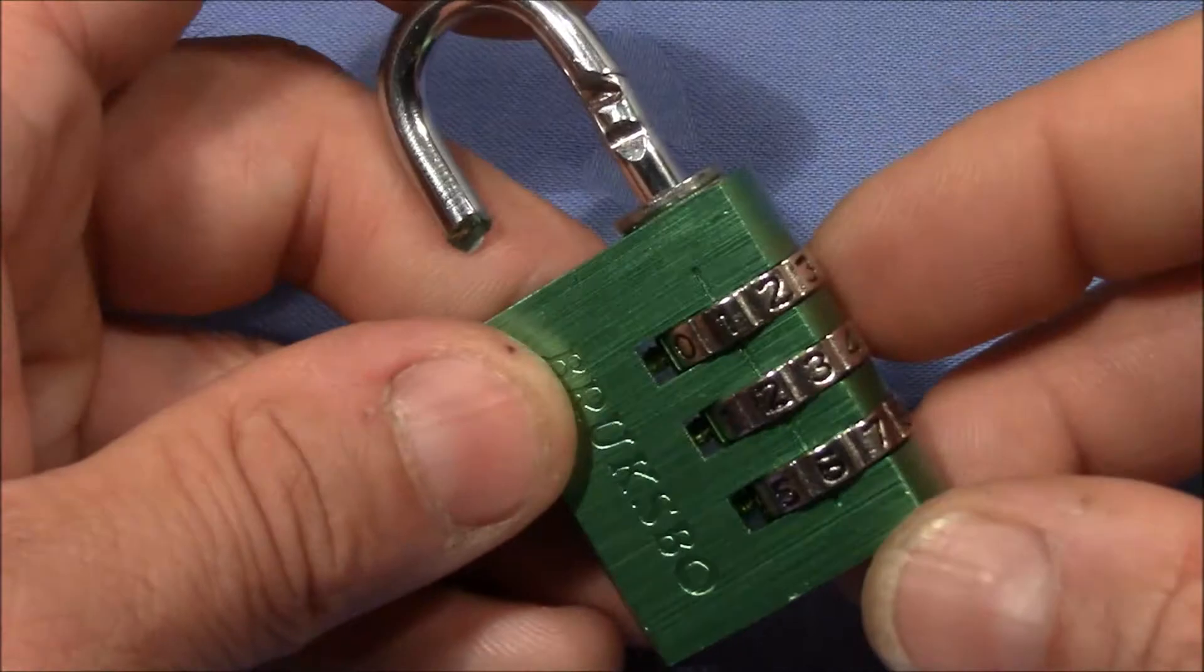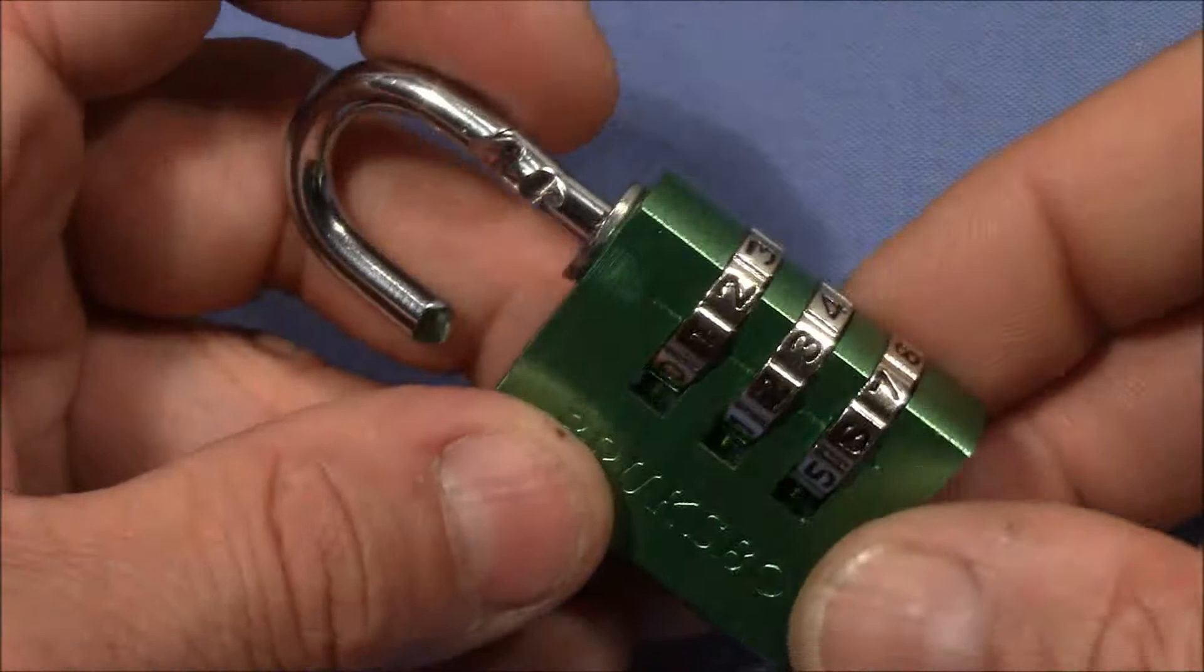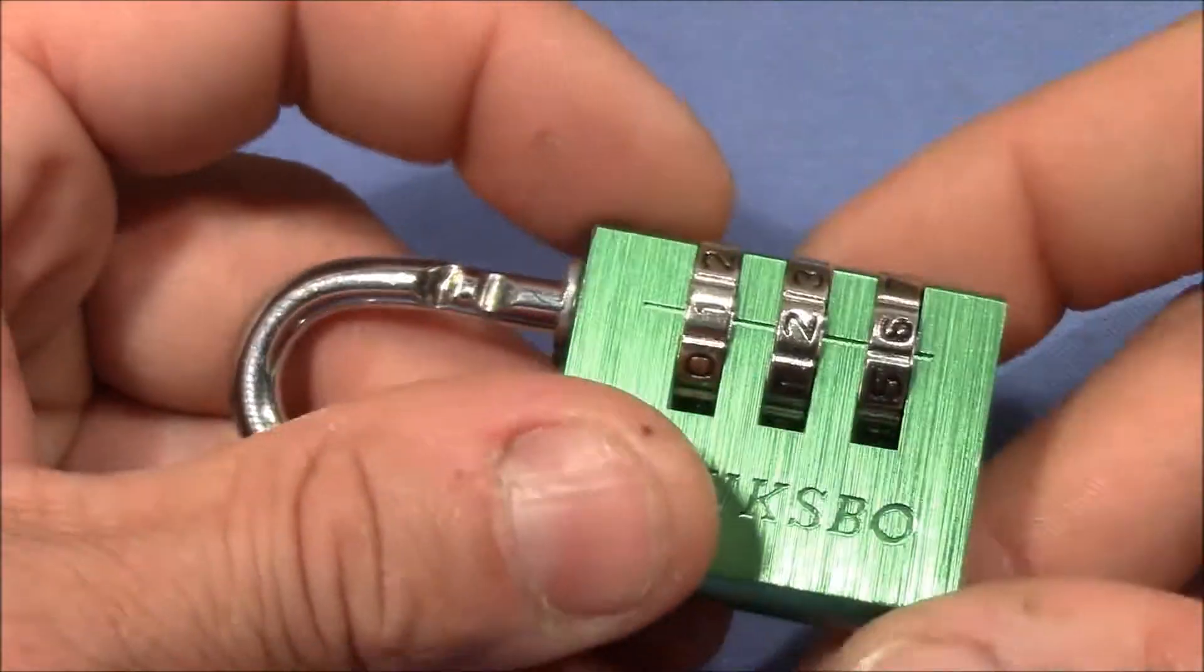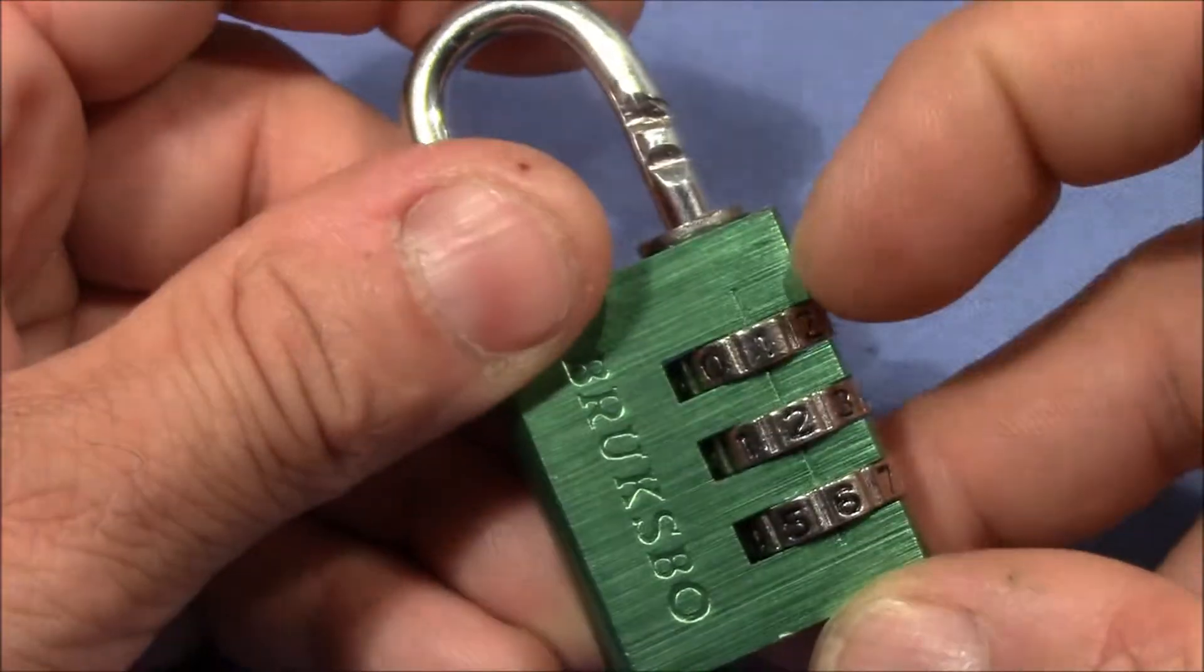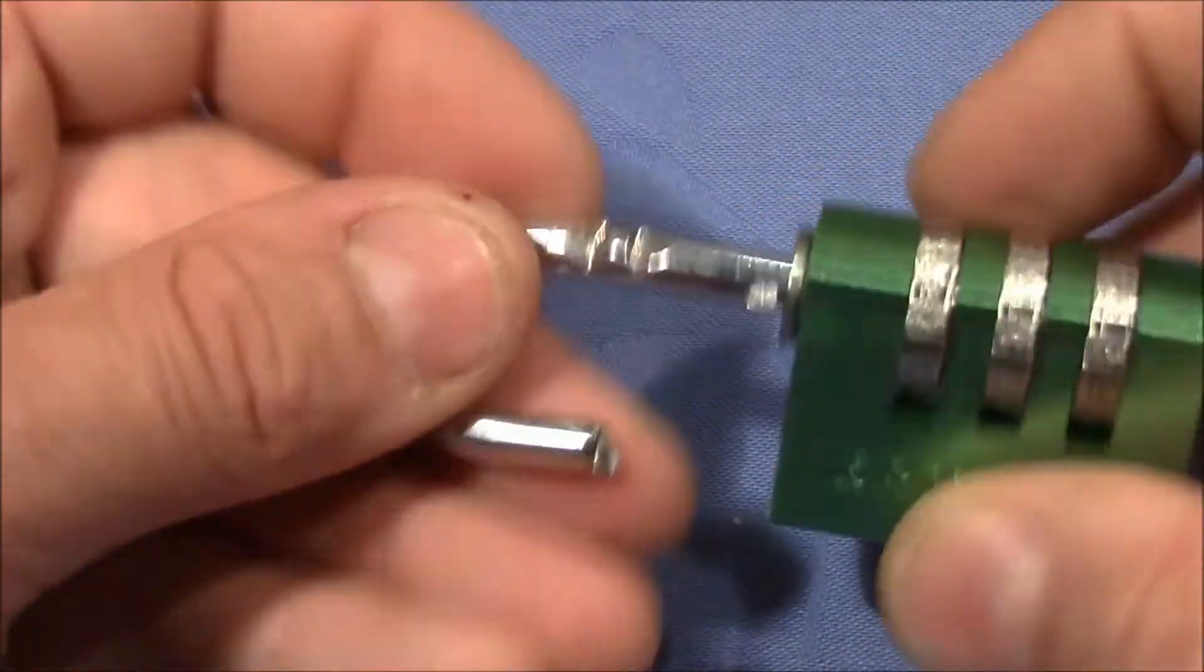Lock was very easy to decode. It has false gates, but the gates are really easy to distinguish true from false gates. So 126 was the actual code, now the shackle comes out all the way.